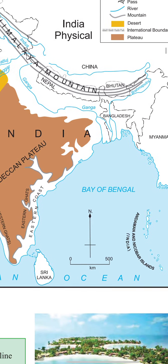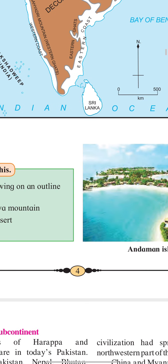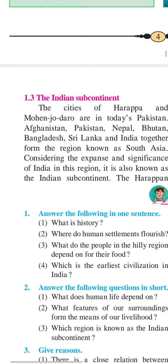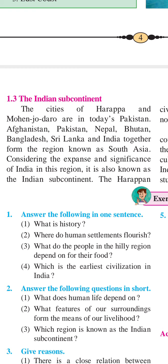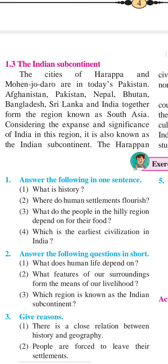Moving to the last topic — the Indian subcontinent. The cities of Harappa and Mohenjodaro are today located in Pakistan. These were the earliest civilizations of India, and both places are now in Pakistan. Afghanistan, Pakistan, Nepal, Bhutan, Bangladesh, Sri Lanka, and India together form a region known as South Asia.